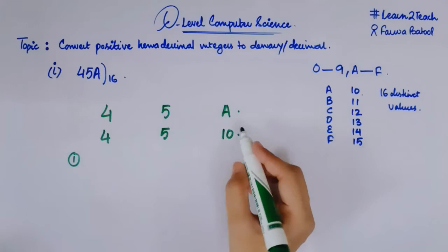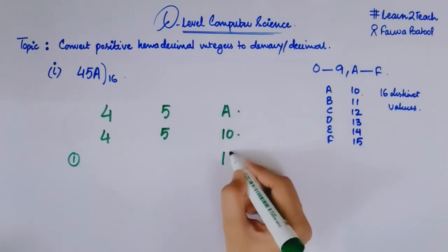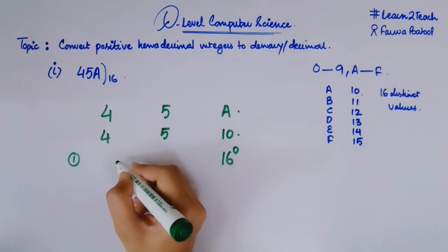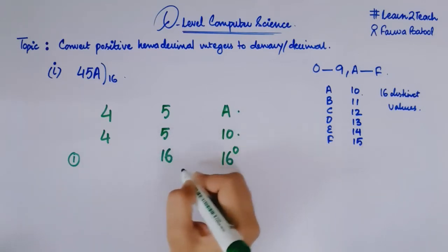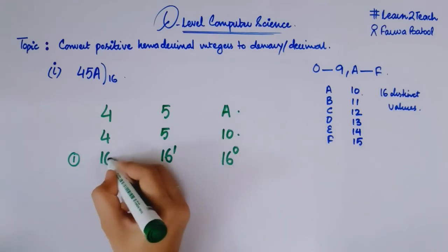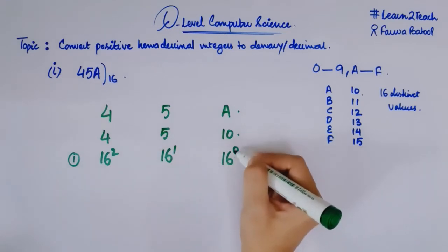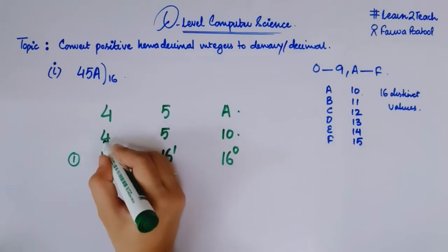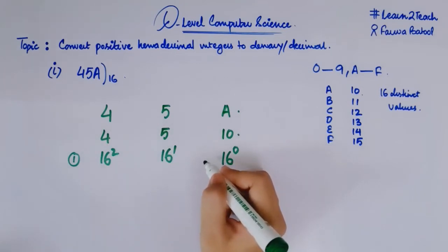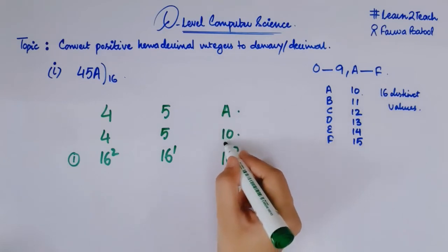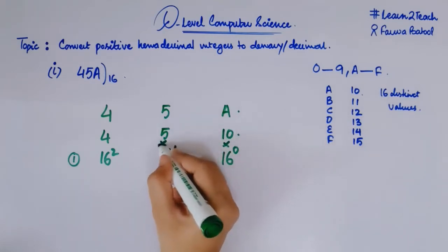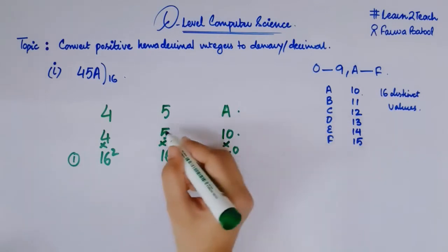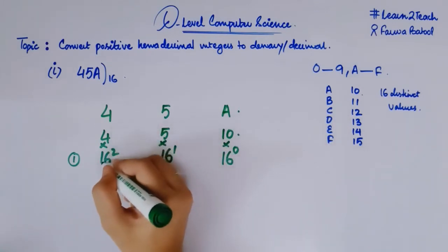Now I need to multiply each digit by its assigned power. So 10 is multiplied by 16 raised to the power 0, then 5 is multiplied by 16 raised to the power 1, and 4 is multiplied by 16 raised to the power 2. What is 16 raised to the power 0? It is basically 1. 5 multiplied by 16 raised to the power 1 is 16. And 4 multiplied by 16 raised to the power 2 is 256.